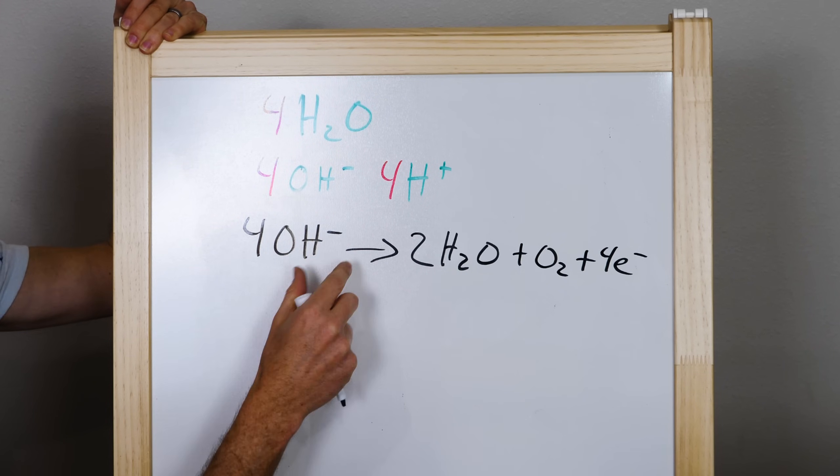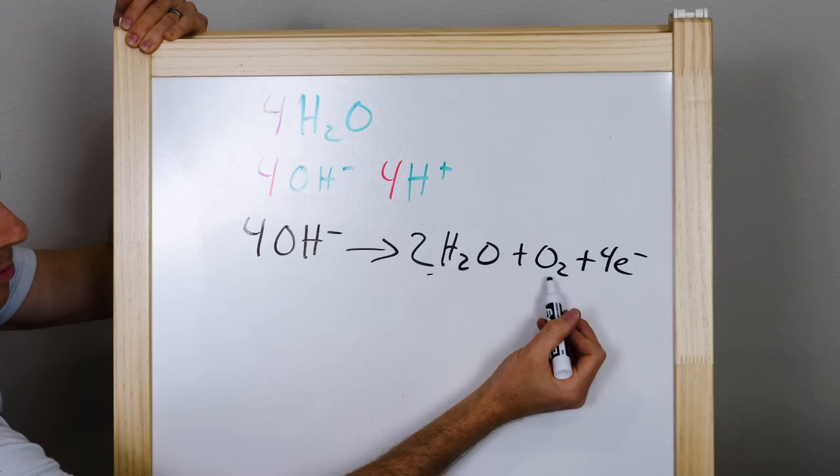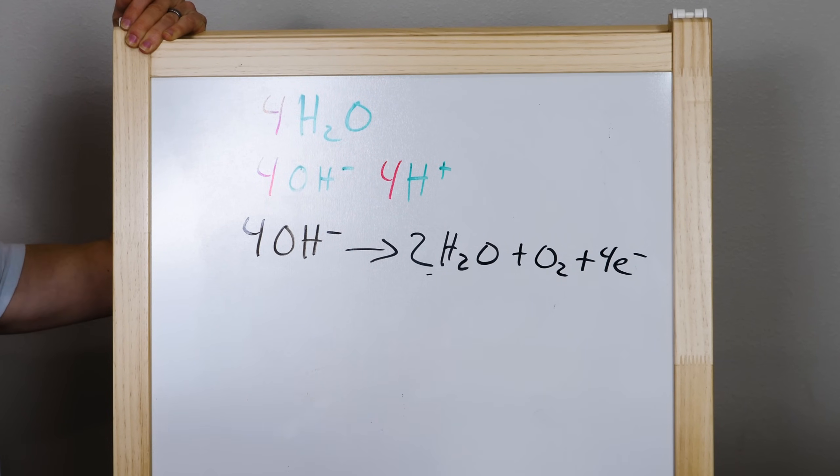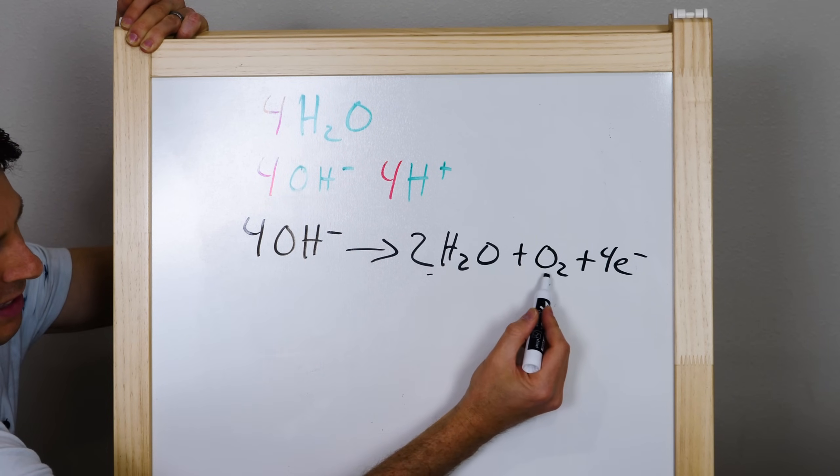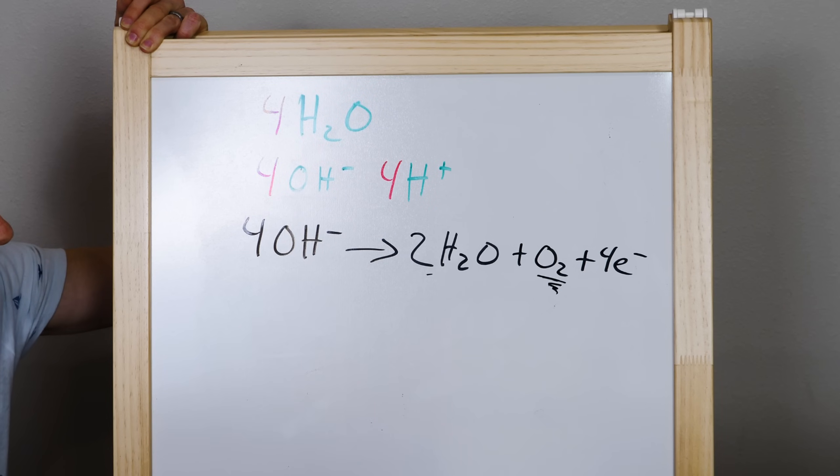So you can see that there's four of these molecules. So there's four extra electrons here. So if we pull those four electrons off, we're left with two water molecules and one oxygen molecule. So, so far we've successfully pulled off an oxygen molecule that used to be part of water.